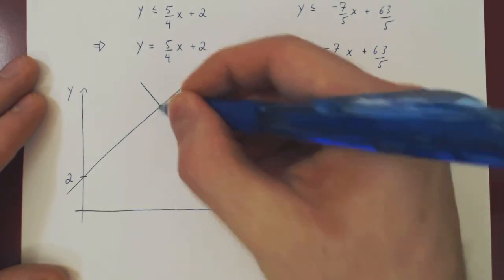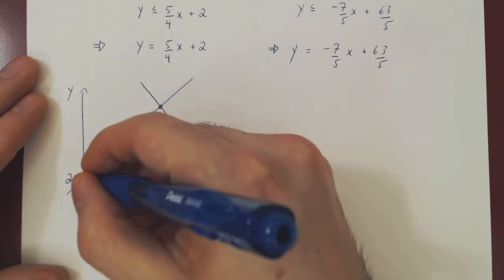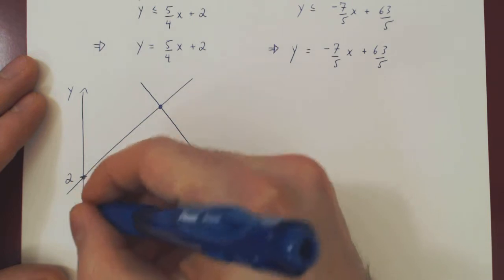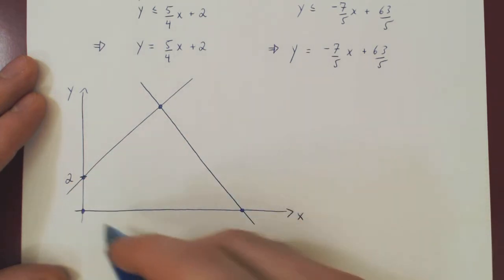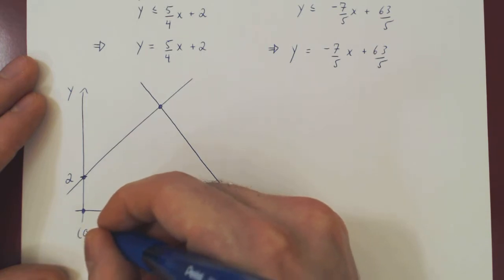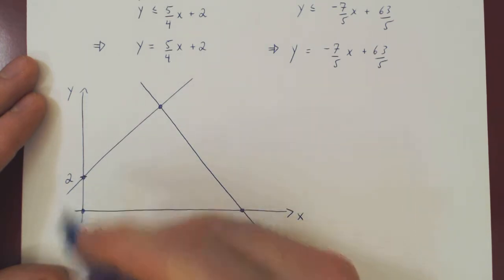And then we must find the vertices of our feasible region. Well let's start with the easiest. This is the origin, so the vertex is x equals 0, y equals 0. This is our y-intercept, so x was 0, y was 2.